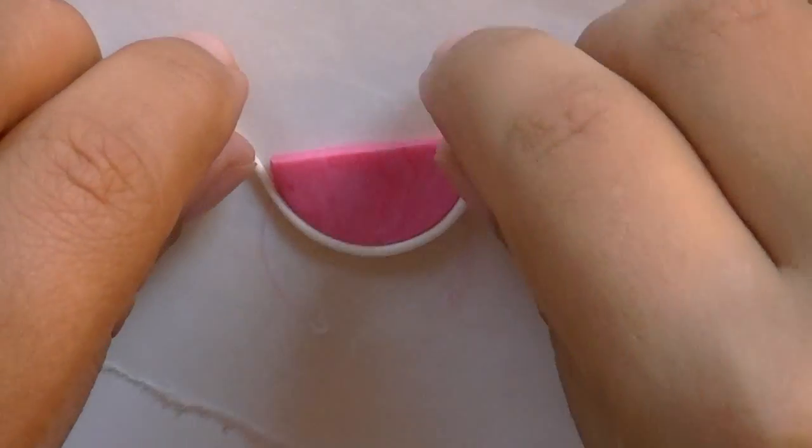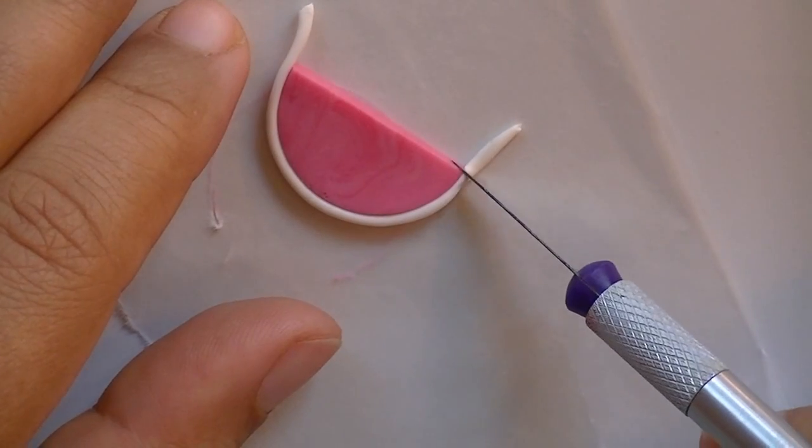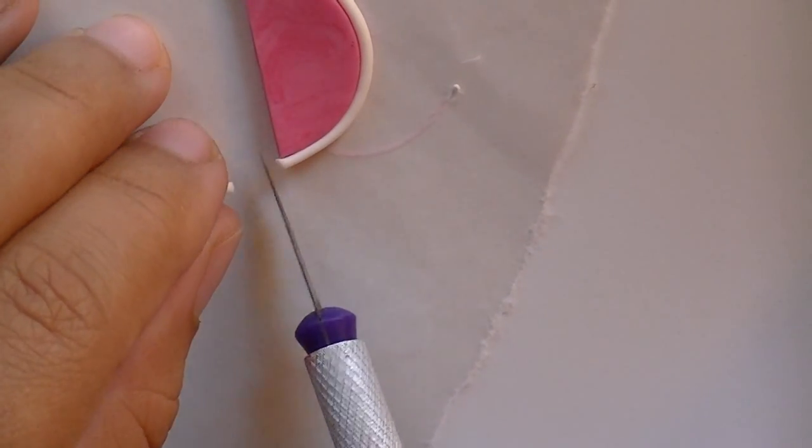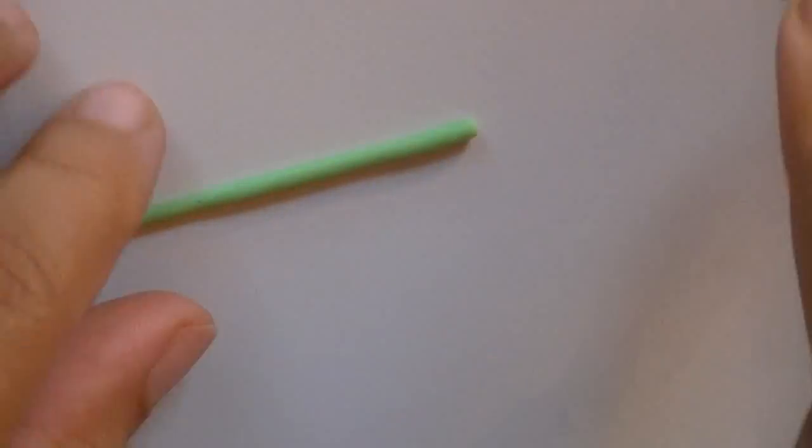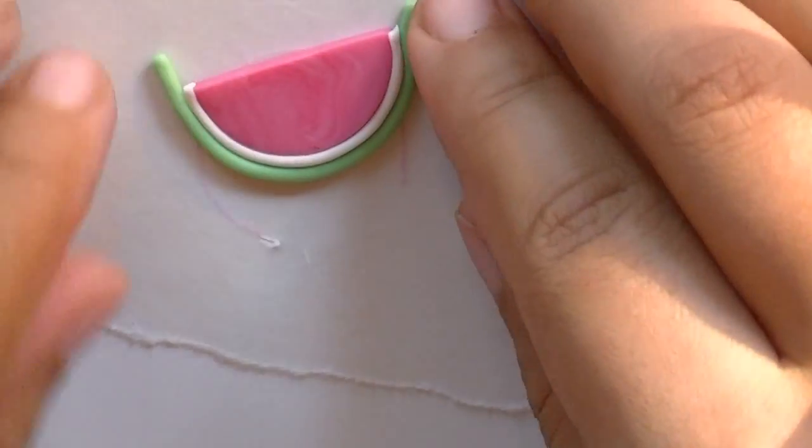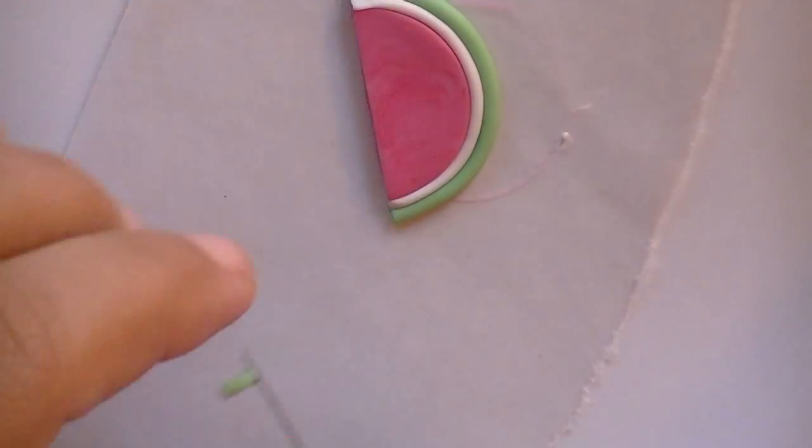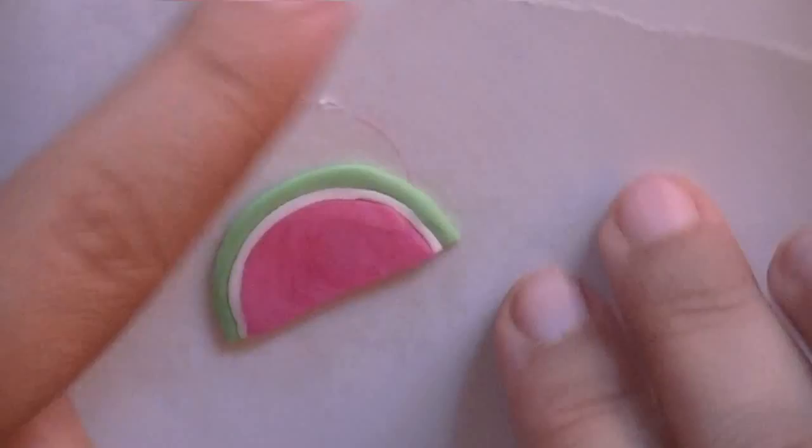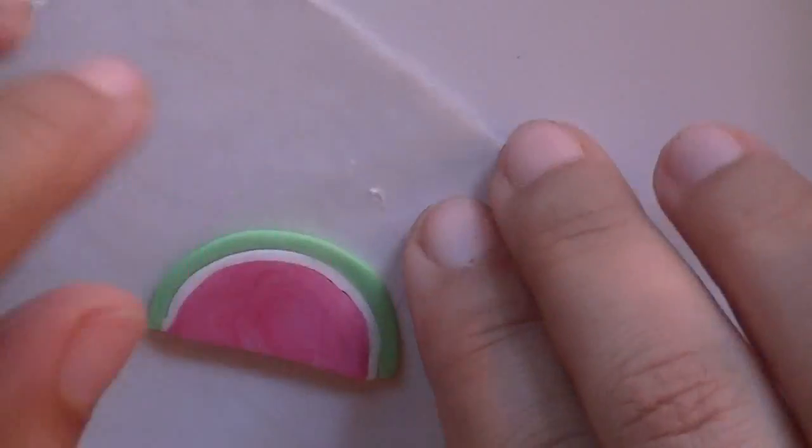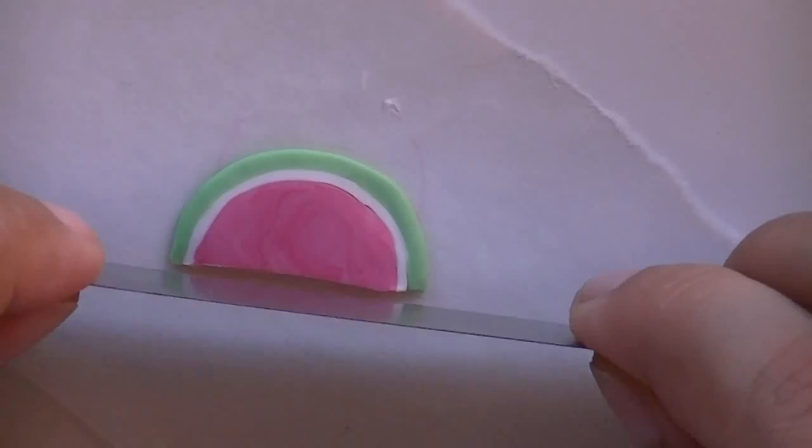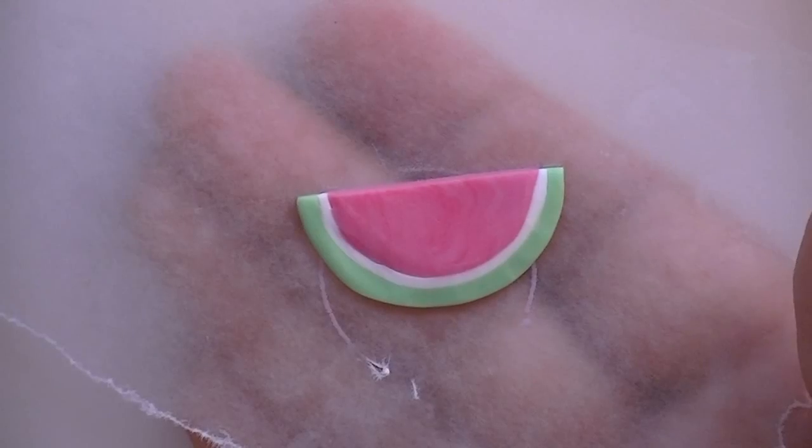Now take your white clay and place a border. Now take your green and do the exact same thing, but on the outside and a little thicker. Once you have this piece, smooth it down with your fingers so that they seem like they're one piece.